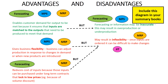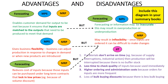Just-in-time also has some potential disadvantages. First, if inputs don't arrive on time — for example due to interruptions to supply or industrial action at the supplier's factory — production will be interrupted because there is no buffer stock. Second, there is less time to check the quality of inputs because they are used immediately in production. Third, there are higher ordering and administration costs because orders are more frequent. Fourth, the business might lose bulk buying discounts because it is ordering smaller quantities more frequently rather than a large quantity at one time.